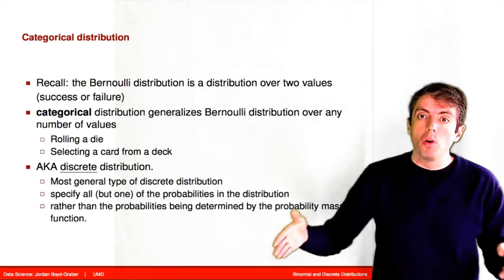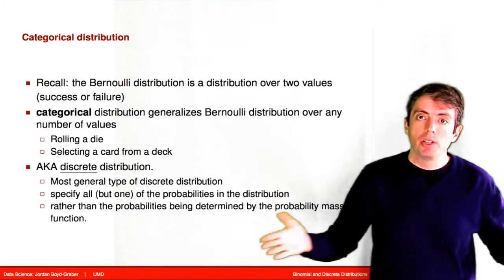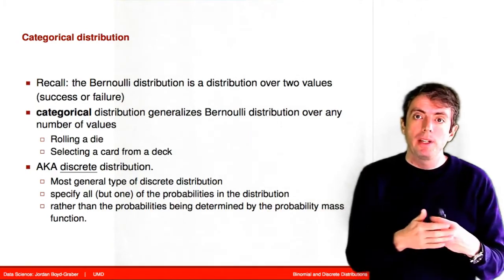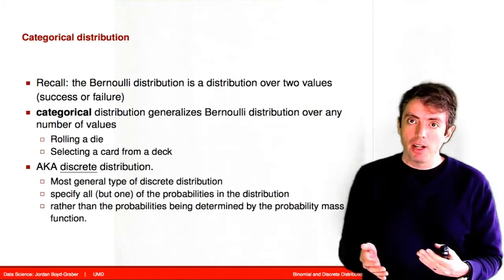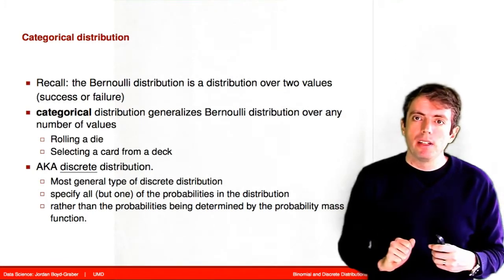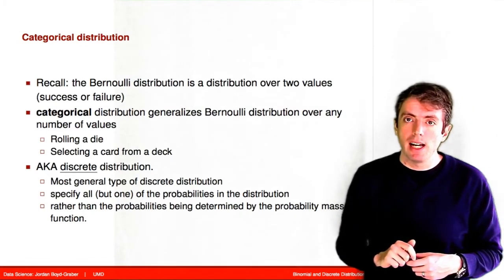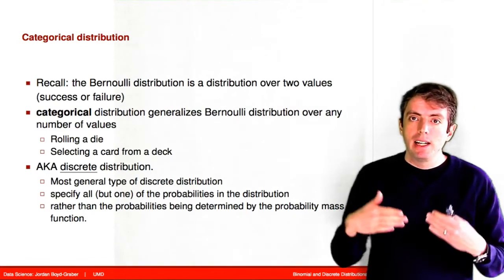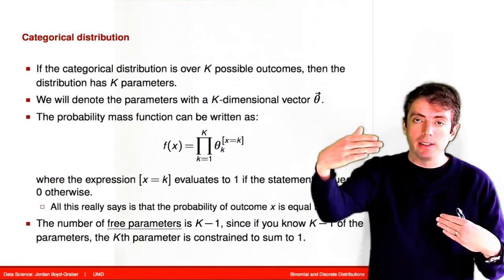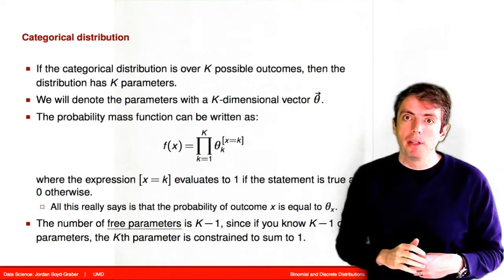Instead of just having success and failure, we could have a distribution over the sides of a die. So instead of a distribution over two outcomes, we now have a distribution over k outcomes. That is parameterized by a vector of length k, which has a probability for each of the different outcomes — say, a probability for each of the sides of your die. When you ask what is the probability of rolling a 3, you look in this vector and see which probability corresponds to that, and that becomes your probability.